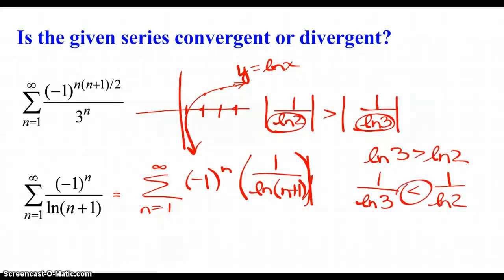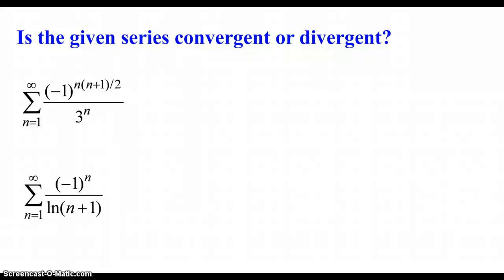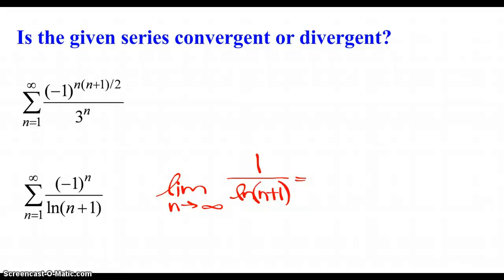This confirms we have an alternating series where subsequent terms are getting smaller. The only thing to put inside the limit is the positive portion of the nth term — never put the alternating portion in there, or you'll confuse yourself. As n gets larger and larger, natural log of huge inputs goes to infinity, so 1 over that is tiny. This series converges.